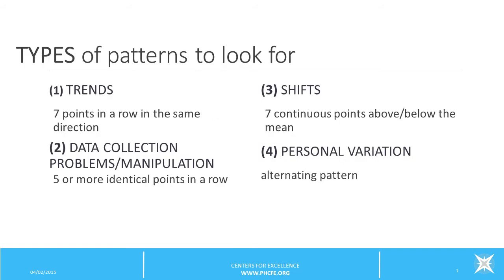There are four types of variation patterns that a run chart can help you detect. First, trends are detected when you observe seven or more points in a row all going in the same direction. Second, data collection problems or possible manipulation are indicated by five or more identical data points in a row. Third, shifts are identified by seven or more continuous data points either above or below the mean. Finally, an alternating pattern — up, down, up, down — suggests different people carrying out the same task using different procedures.